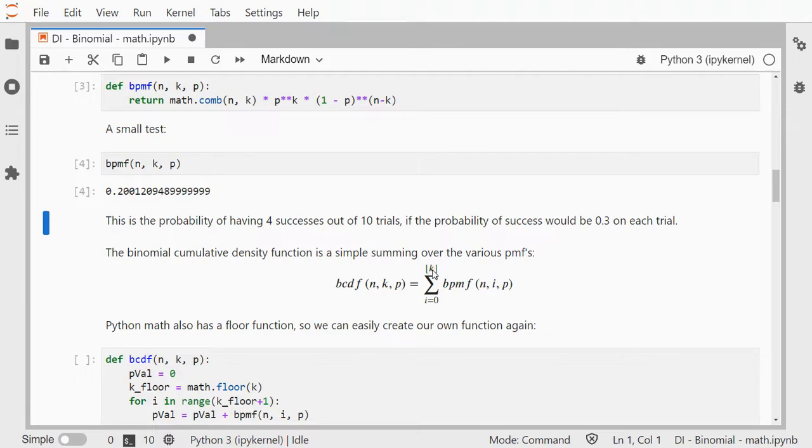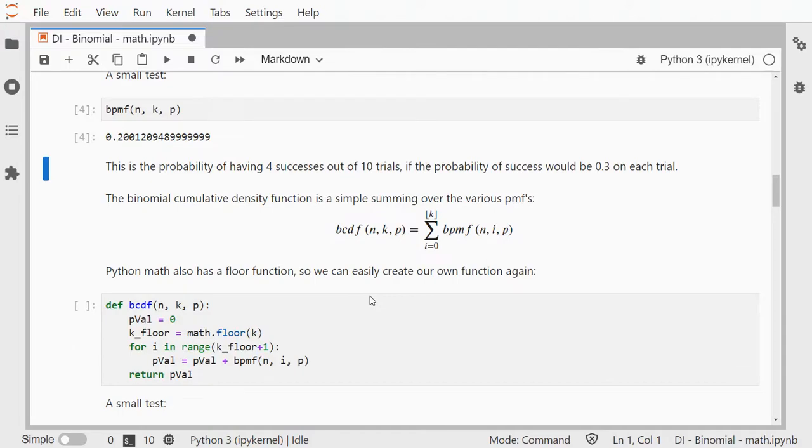Now k should actually be an integer anyway so it's the number of successes, so that should never be able to be negative. But just in case in some situations for some reason it might not be an integer.